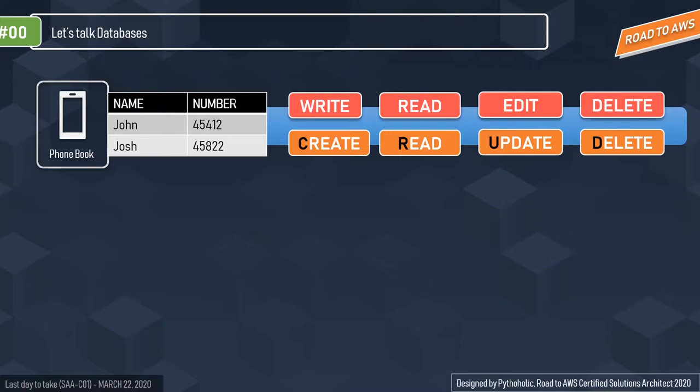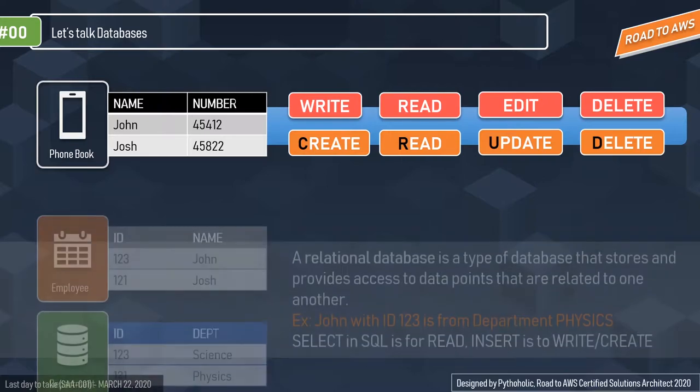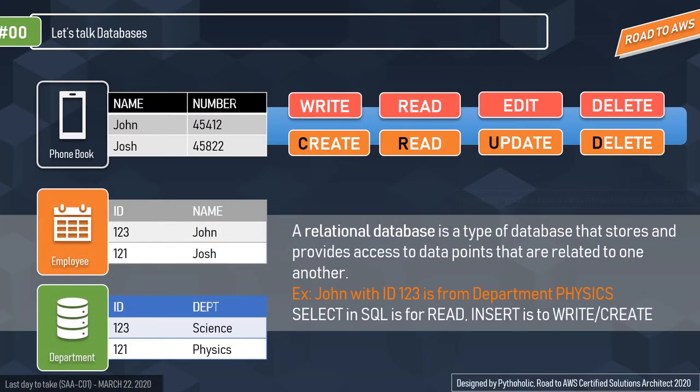CRUD stands for Create, Read, Update, and Delete. Write is your Create operation, Read is obviously Read, Edit is your Update, and Delete is Delete. These four form the major pillars of database operations. The concept that's really important here is the relational database — a database based on the relational model of data.